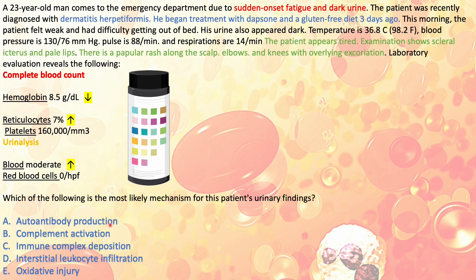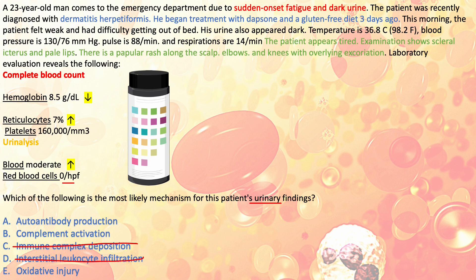Now evaluating the answer choices: autoantibody production means autoimmune hemolytic anemia — this could be intravascular but is mostly extravascular, so we'll keep it for now. Complement activation is possible with PNH — keep it. Immune complex deposition is incorrect here because the blood in urine is not due to red blood cells, so this isn't hematuria or glomerulonephritis. Interstitial leukocyte infiltration doesn't explain the urinary findings — this isn't acute interstitial nephritis. Nothing is wrong with the kidneys. So we're down to three answer choices.